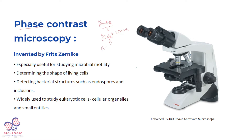A beam of light has many individual rays of light. The same rays of light behave differently in the specimen — they change their velocity. When they change their velocity, they change their phase. Because of the phase change, we get a different image.